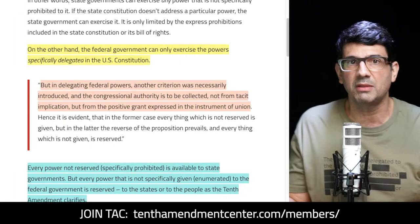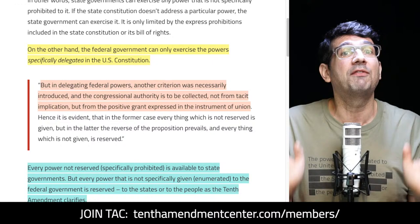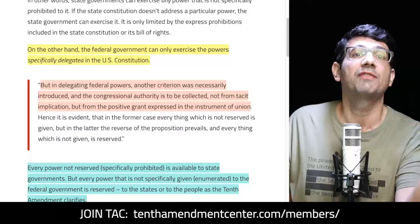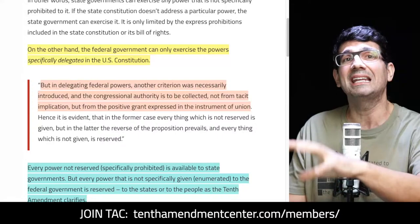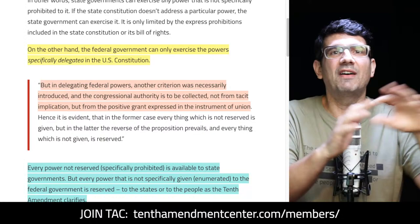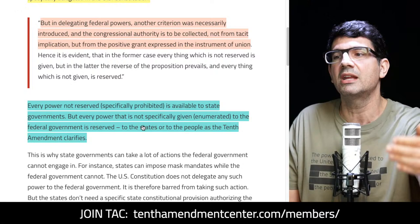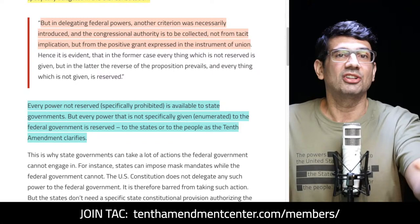Wilson continued: 'In delegating federal powers, another criterion was necessarily introduced. Congressional authority is to be collected not from tacit implication, but from the positive grant expressed in the instrument of union. Hence it is evident that in the former case, everything which is not reserved is given. But in the latter, the reverse prevails — everything which is not given is reserved.' Every power not reserved or specifically prohibited is available to state governments, but every power not specifically enumerated to the federal government is reserved to the states or to the people, as the Tenth Amendment clarified.